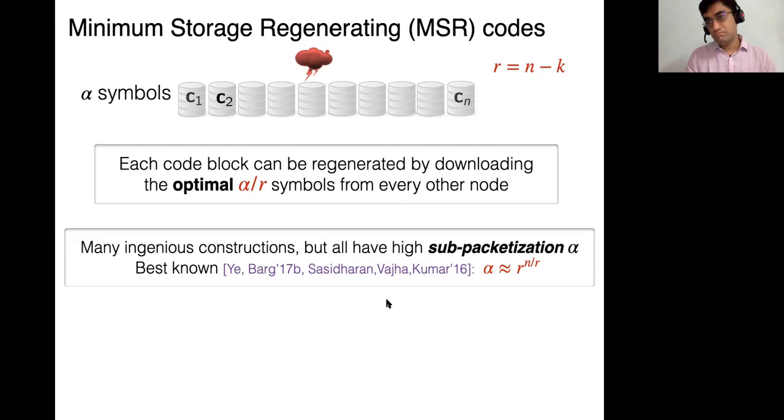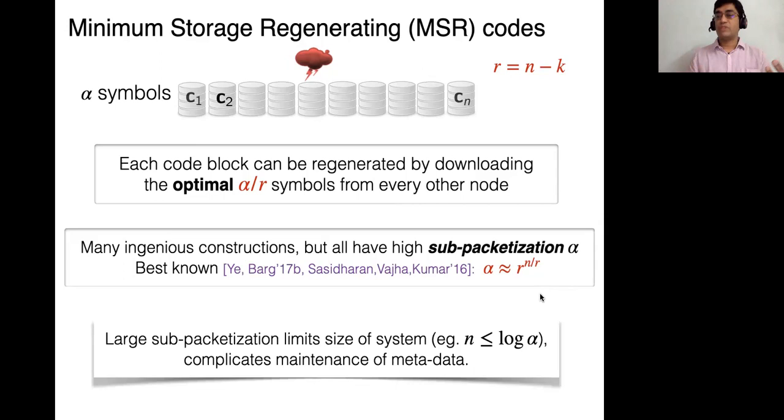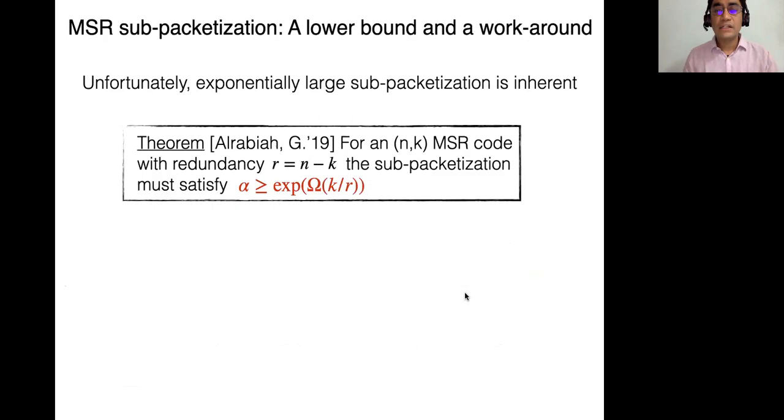And what does an MSR code do? First of all, it's an MDS code where every codeword symbol can be regenerated or repaired by downloading exactly the optimal alpha by r symbols from every other node. And this meets the cut set bound, is the best you can achieve. And these MSR codes are codes which achieve this optimality. And by now there are many clever, ingenious constructions of MSR codes. But one drawback all of them have is that they all have high sub-packetization. This alpha, the number of symbols which you have to store at each node, tends to be very big. And the best known is something like r to the n over r. And really you should think of r the redundancy as small and n is kind of big. So these are exponentially big in the size of the system, which is not good.